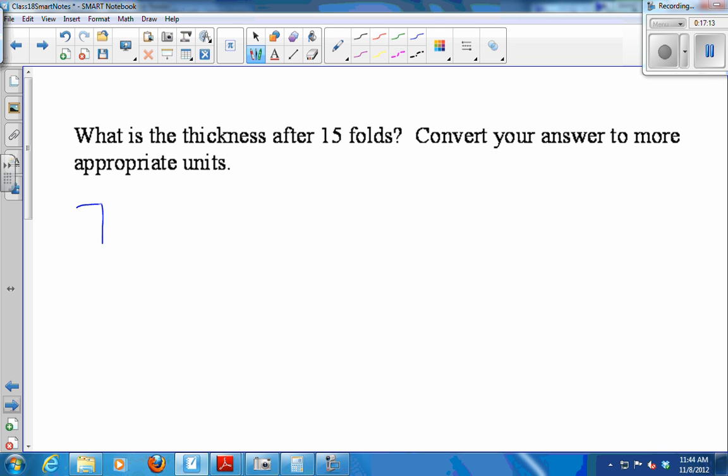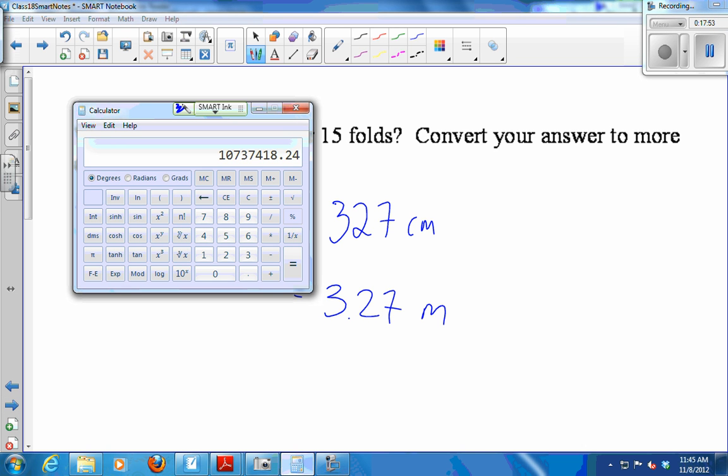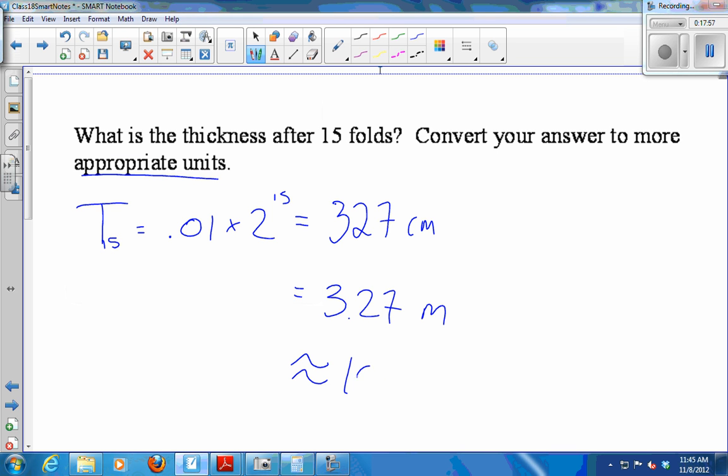And then the thickness after 15 folds, T sub 15, that would be 0.01 times 2 to the 15th, which came out to about 327 centimeters. And the question is, how big is that? I asked you to convert to appropriate units. So there are 100 centimeters in a meter, so I can divide this by 100 to get meters. So this is 3.27 meters. And the meter is like about 3 feet. It's not perfect, but 3.3, something like that. 3.3. So this comes out to, if it's 3.3, let's see, about 10 feet. I'll just do approximately 10 feet, which is really tall.